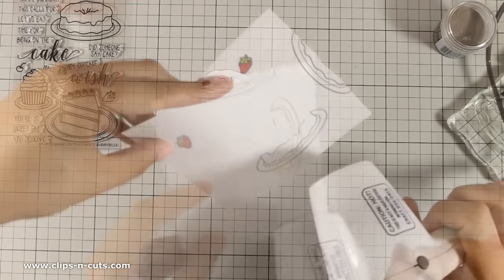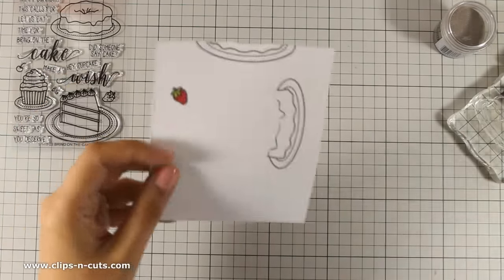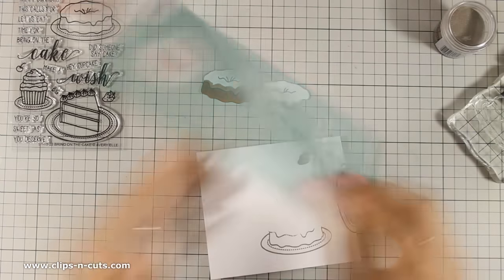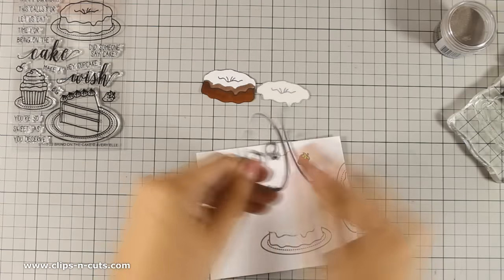So once this is set up I am going to use my die cutting machine and the matching dies to cut out the cake and the strawberry and then I will go ahead and assemble my cake.